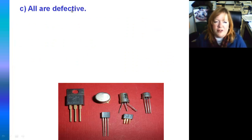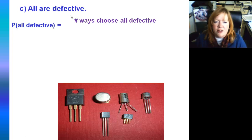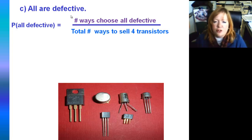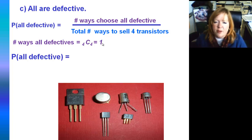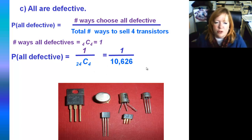Let's say they're all defective. We're choosing all four from the four defective transistors. The number of ways to choose all four defective is four choose four, which equals one. So the probability that they're all defective is one out of 24 choose four, which is one out of 10,626.